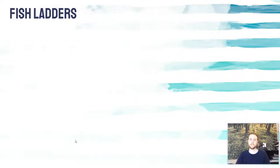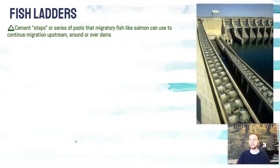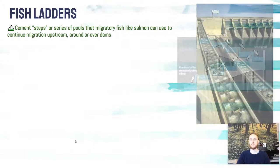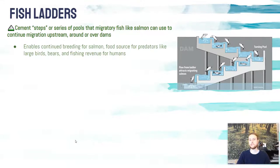One consequence of dams is the disruption of fish migration — fish have a hard time migrating upstream past the dam because they can't swim through it or jump over it. A common solution is a fish ladder: a series of cement steps or pools that salmon can use to swim over the dam, flopping and jumping from pool to pool to eventually reach the other side. This enables migratory species like salmon to reach their spawning grounds upstream, where they reproduce and maintain their population.